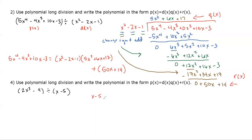Looking at question 4, same concept — use polynomial long division and write the polynomial in the same form. Setting up our equation: we're missing the square and linear terms, so we put in placeholders: 2x³ + 0x² + 0x − 4.